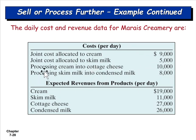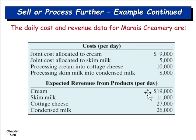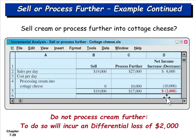Should we process cream into cottage cheese? We can sell cream as-is for $19,000 or process it into cottage cheese for $27,000 — a difference of $8,000 in additional revenue. But it costs $10,000 to make that happen, so we'd actually decrease net income by $2,000. In this case, we stop and sell the cream as-is — it costs more to process than the additional revenue earned.